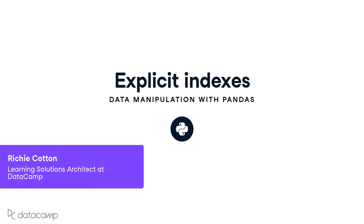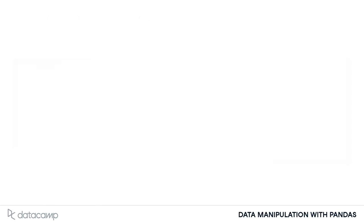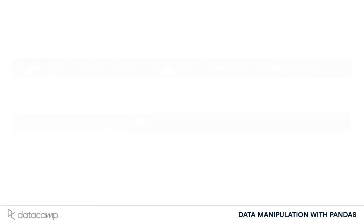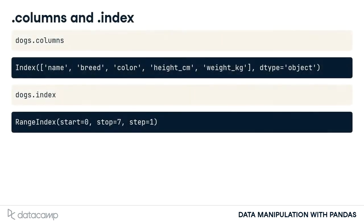In chapter one, you saw that data frames are composed of three parts: a numpy array for the data and two indexes to store the row and column details. Here's the dog dataset again. Recall that .columns contains an index object of column names and .index contains an index object of row numbers.